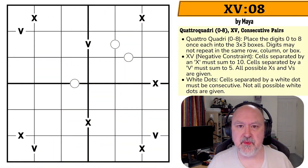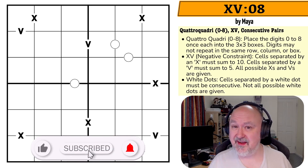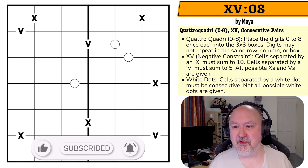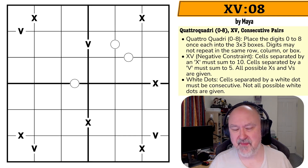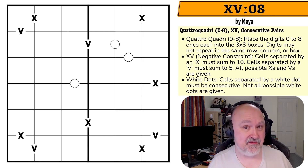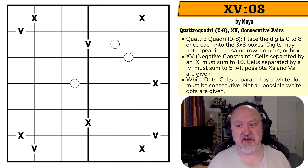Hi, and welcome to Brimster Puzzles, a channel dedicated to showcasing the wonderful world of variant Sudoku. Today I'm going to be showing you a Quattro Quadri variant. This is a puzzle called XV08 by Maya. This puzzle is a Quattro Quadri Sudoku variant, and then it's a variant on that variant, plus a couple of fairly standard constraints.